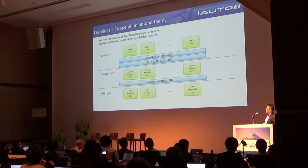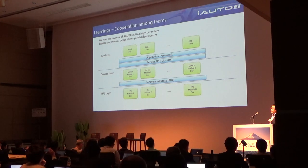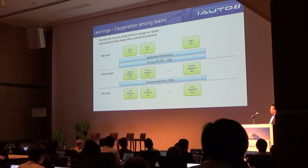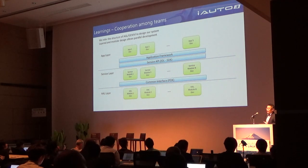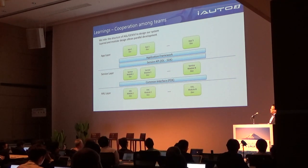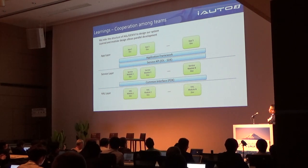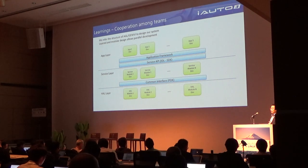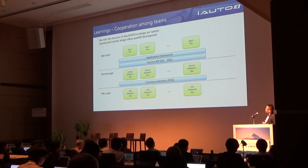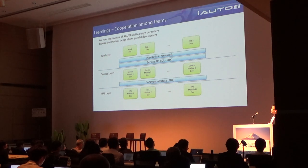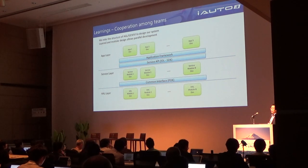The layered and modular design enable parallel development. We created PDK and SDK so that the middleware layer and the service layer can be developed in parallel. We also implemented an application framework which can manage the whole lifecycle of applications, so that application development can be independent. The deployment of applications becomes much more flexible — applications can even be downloaded from the application store after the SOP of the car.